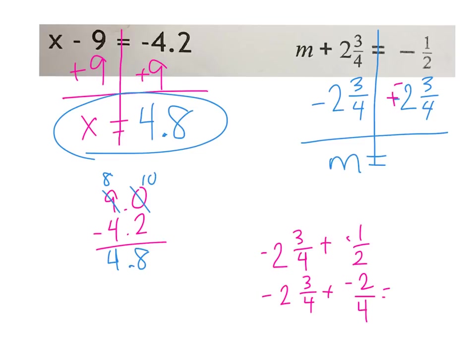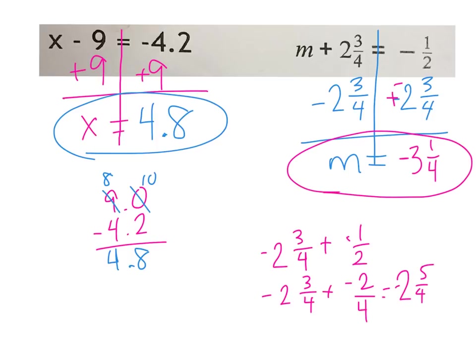My whole number plus my whole number, I still have negative 2. My 3 fourths plus my 2 fourths gives me 5 fourths. I need to simplify that — 5 fourths is really 1 and 1 fourth. So my 2 plus that extra 1 and 1 fourth gives me 3 and 1 fourth, and it is negative. So M equals negative 3 and 1 fourth.